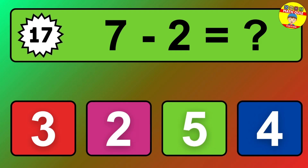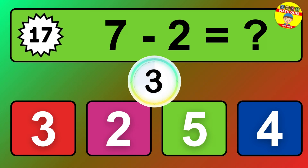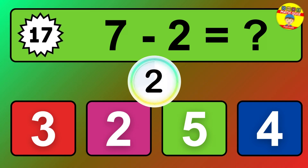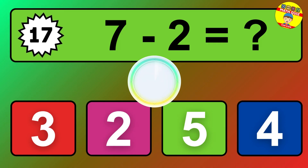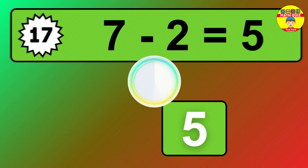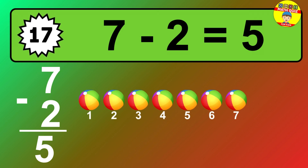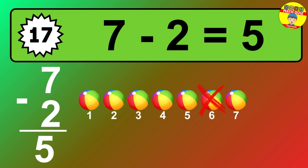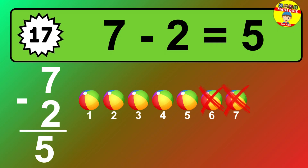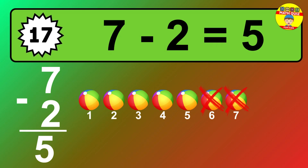Question seventeen: seven minus two equals what? So the answer is seven minus two is five. Let's count it: one, two, three, four, five.